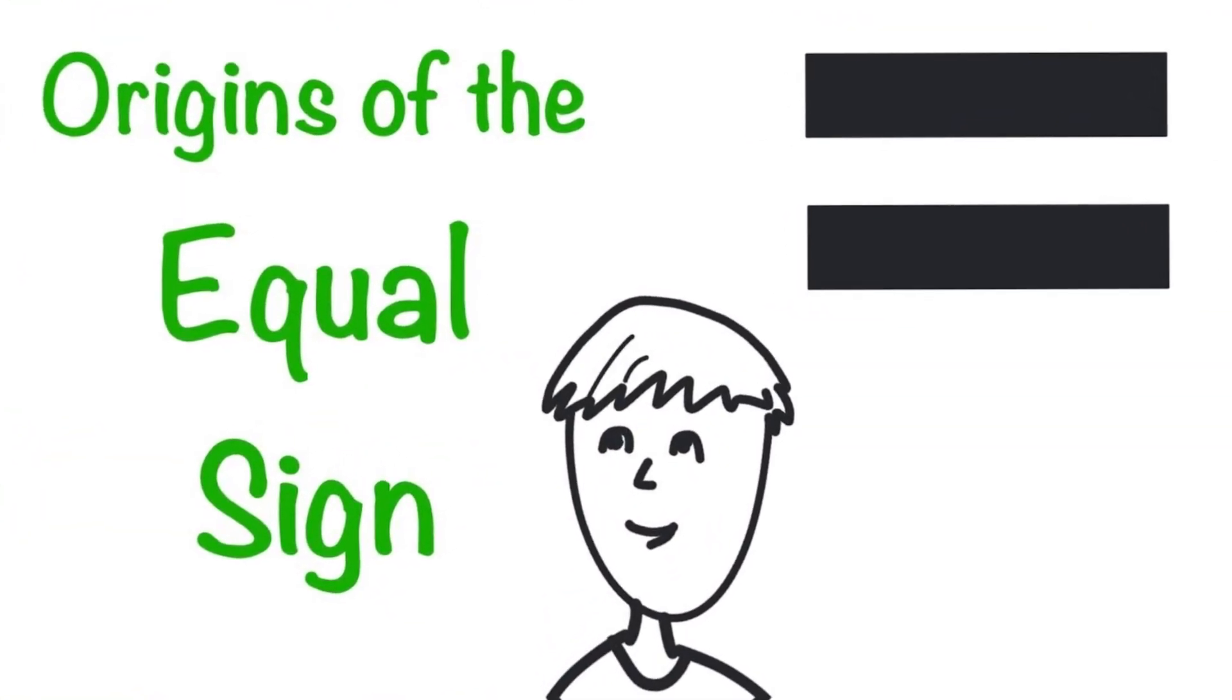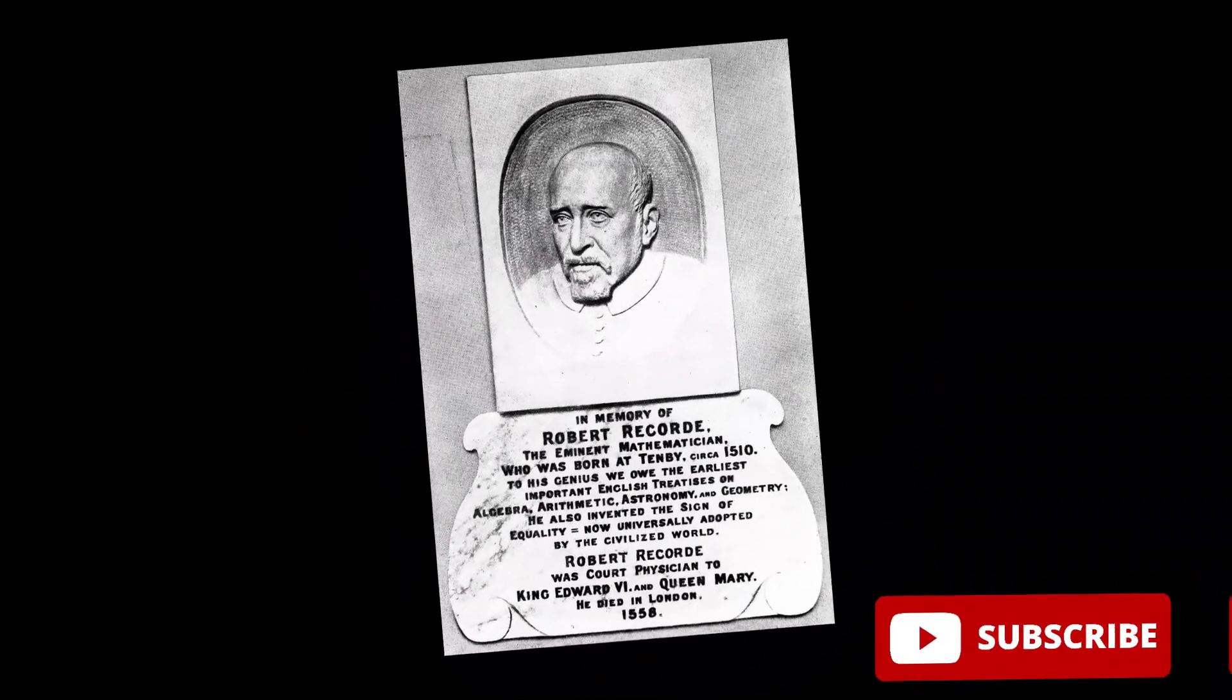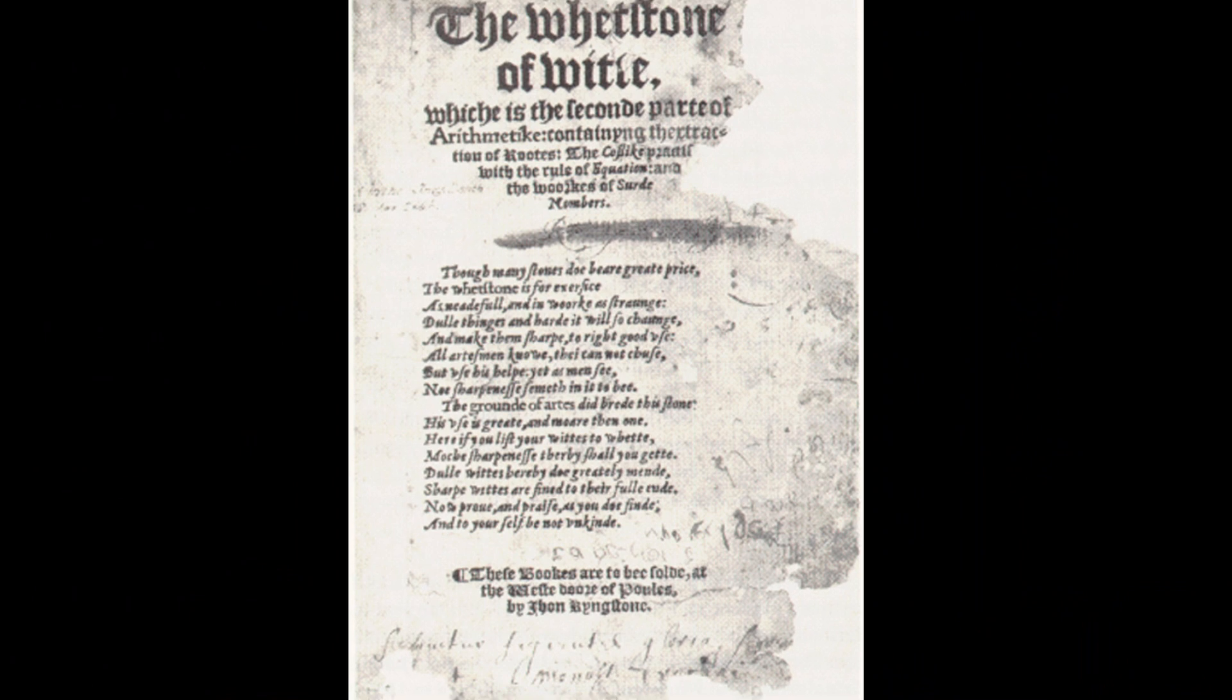The history of the equal sign can be traced back to the 16th century when a German mathematician named Robert Record introduced it in his book The Whetstone of Witter.